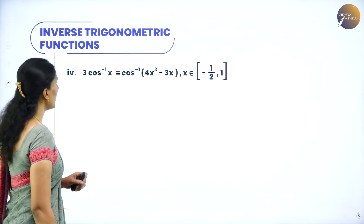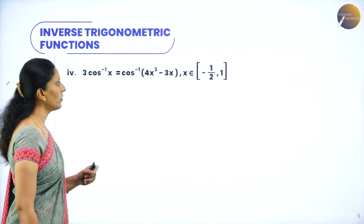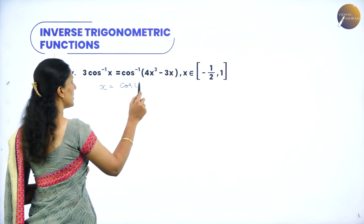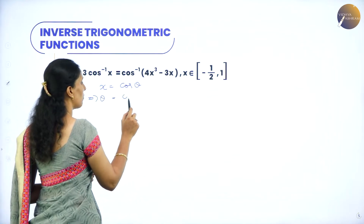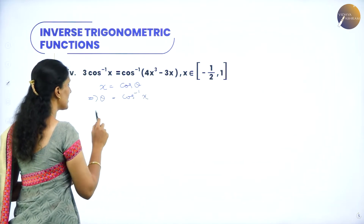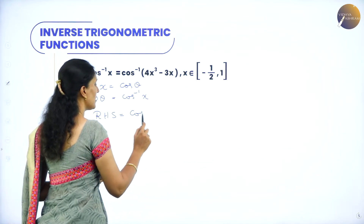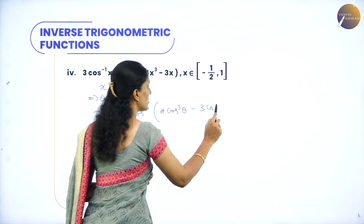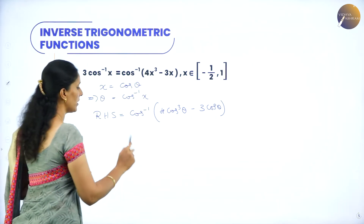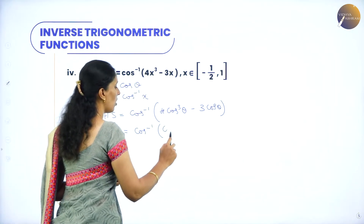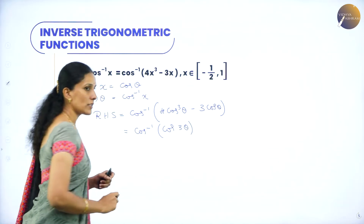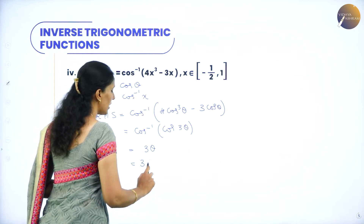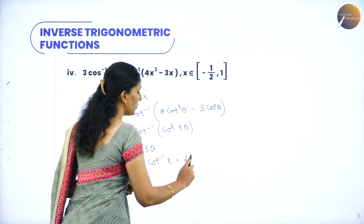Next: 3 cos inverse x equals cos inverse(4x³ - 3x). Let x equal cos theta, so theta equals cos inverse x. Consider the RHS: cos inverse(4 cos³theta - 3 cos theta). Now 4 cos cube theta minus 3 cos theta equals cos 3theta. And cos inverse of cos 3theta is 3 theta, which equals 3 cos inverse x — that is the LHS. Hence proved.